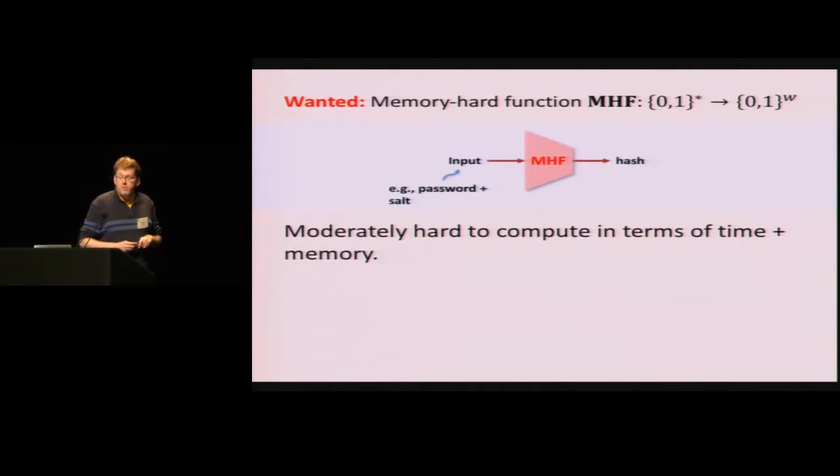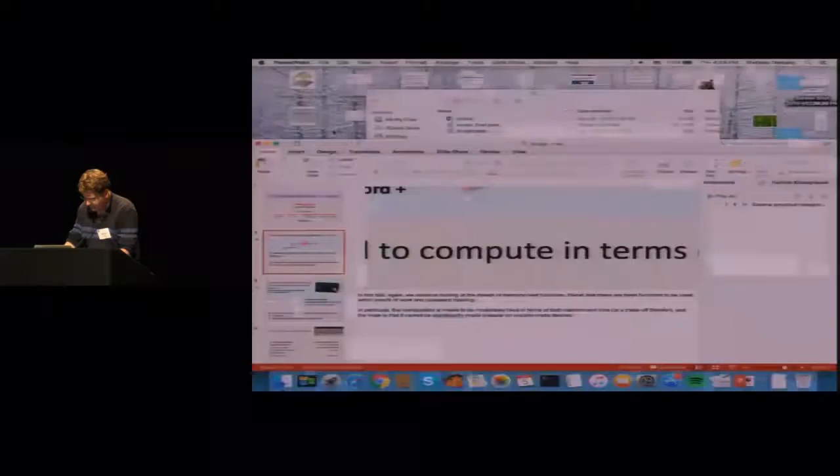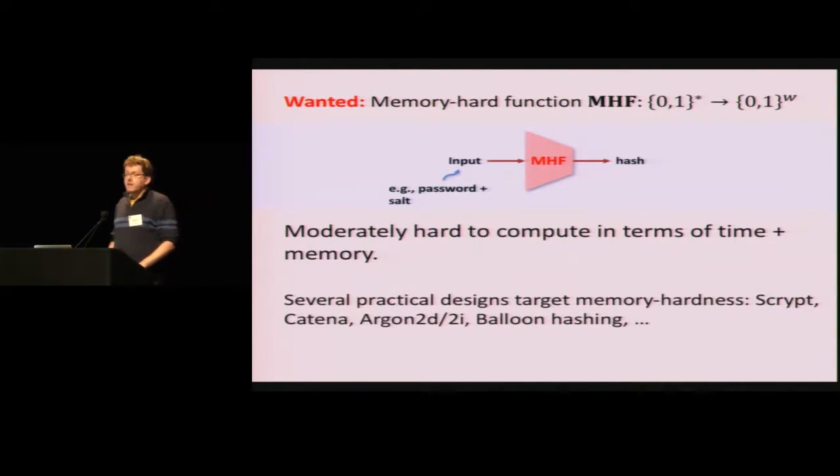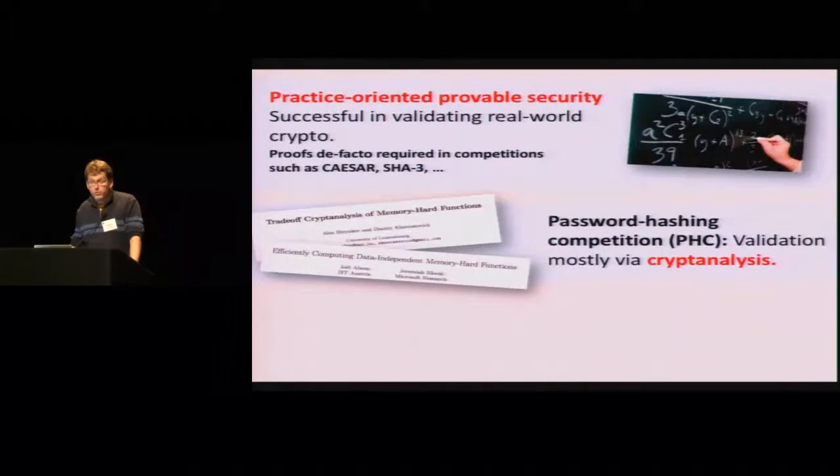So I don't need to introduce the concept of a memory hard function anymore. Jeremiah has introduced the notion. For those of you that missed the talk, or just came in, just think of them as moderately hard hash functions to be used in the context of password hashing, or key derivation, or proofs of work, where moderate hardness is in terms of both time and most importantly, memory consumption. And there have been numerous practical designs that targeted memory hardness, like S-Crypt and Argon2D, Argon2I, Catano, balloon hashing, and many more. But the focus of this talk is going to be on provable security.